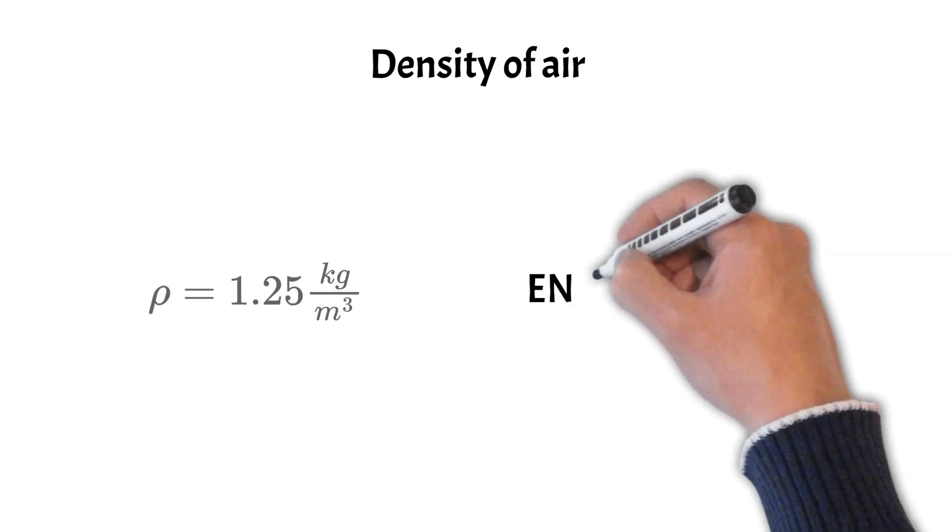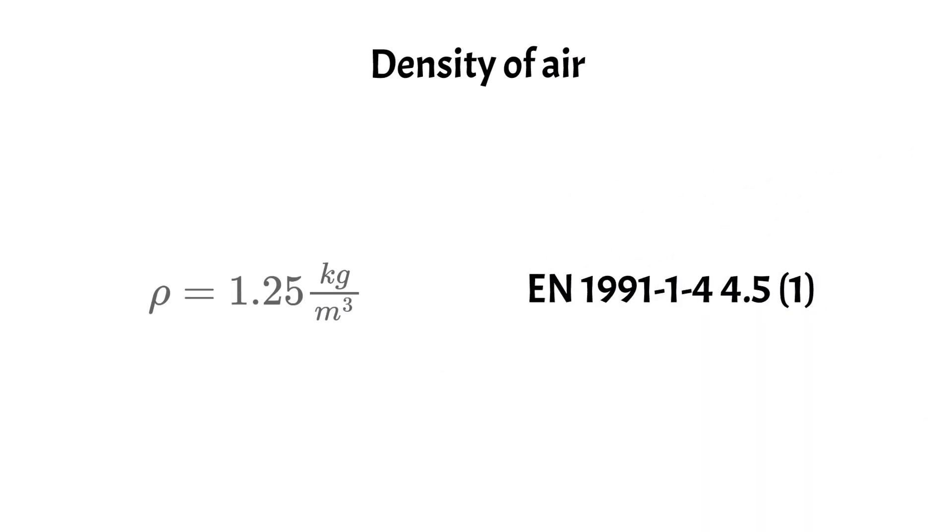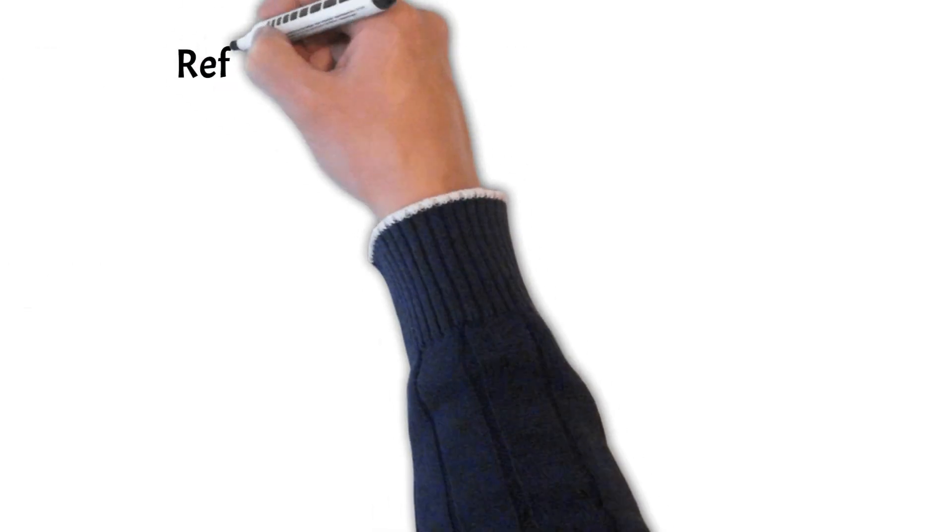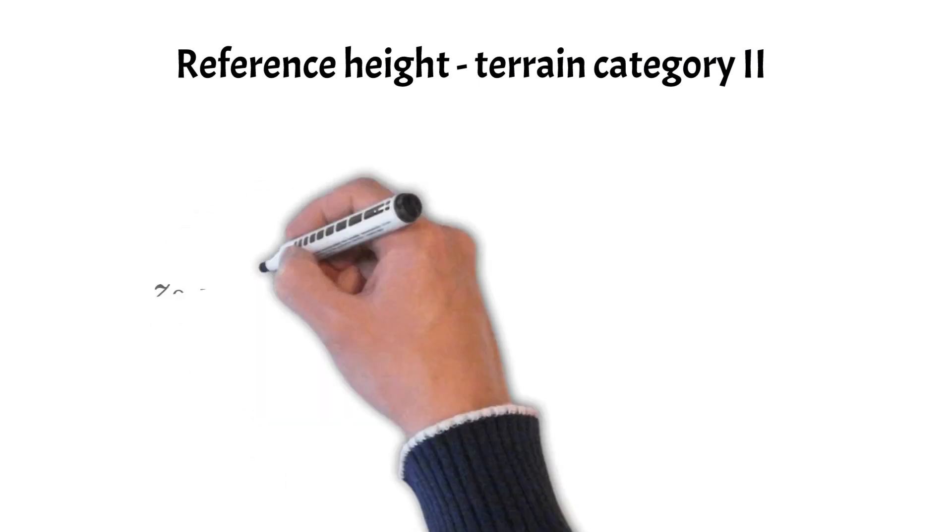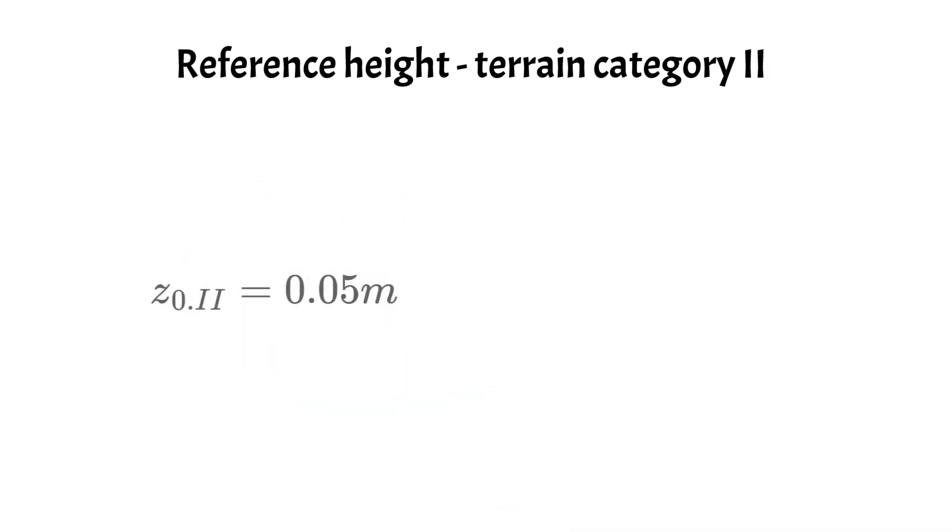The density of air is given as 1.25 kg per cubic meter. Now I know we are probably already tired of some parameters, but we still have a couple more to go. Next up we define the reference height of terrain category 2. This value is found in Eurocode as 0.05 meters.